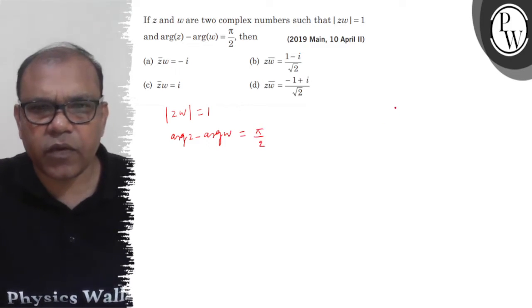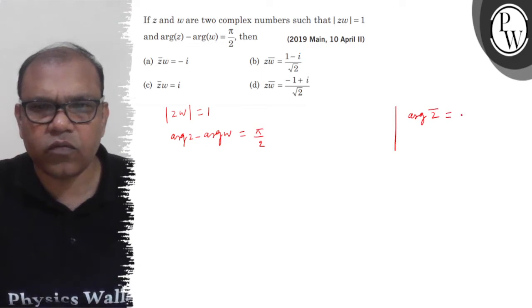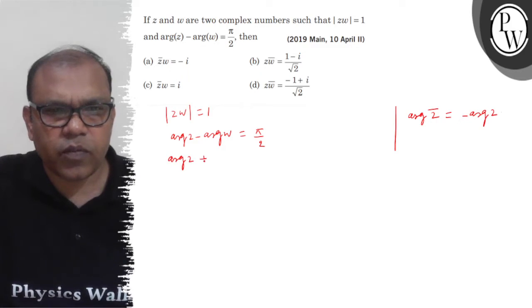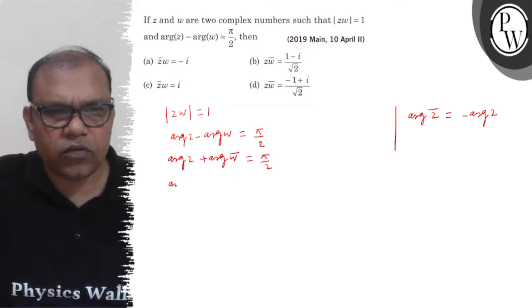The first property we use is: argument of z-bar equals minus argument z. When we apply this property, we get argument z plus argument omega-bar equals pi by 2. This implies argument of z into omega-bar equals pi by 2.